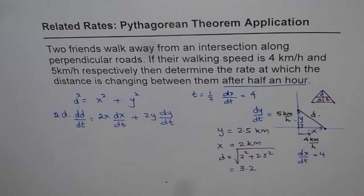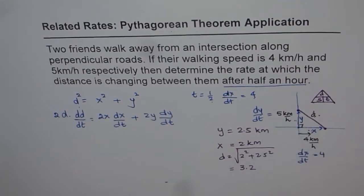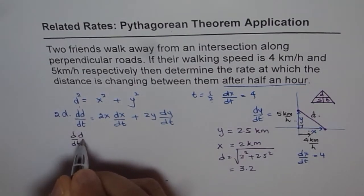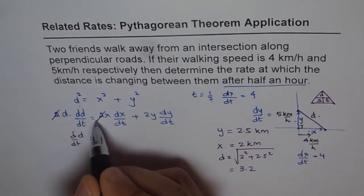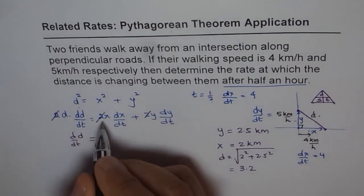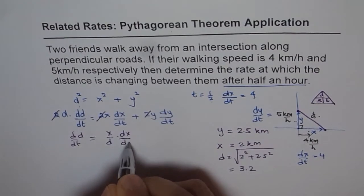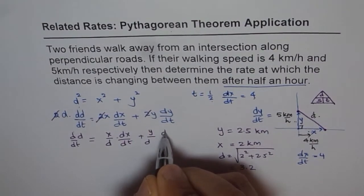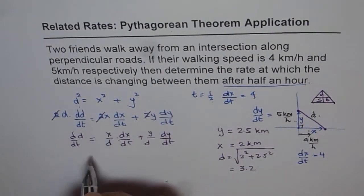Now we know all our values and we can find rate of change of distance between them. That is dd/dt. So what we could do here, we could divide by 2, so we got rid of the 2's. And dd/dt is x over d times dx/dt plus y over d times dy/dt. So we divide by 2d, cancel the 2's. So ratio of x over d, x is 2, d is 3.2, and dx/dt for us is 4.